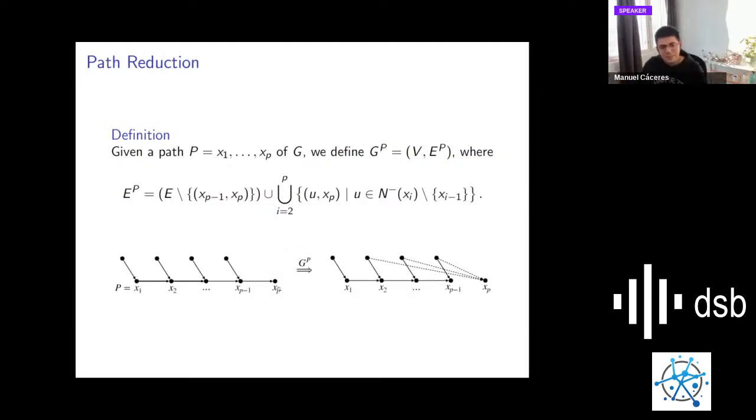Here's a more graphic idea of what is happening. If this is the path, what we do is first remove this last edge. Then for every incoming edge onto the path, we put this transitive edge that represents using this suffix of the path. Of course, we don't put the edge from the in-neighbors to the first vertex, because this would mean to use the whole path that we would like to avoid in our test.